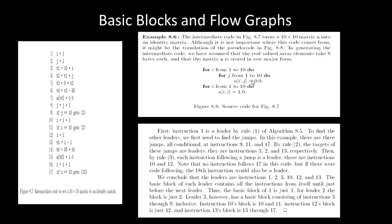Let's look at an example. We have an intermediate code for a 10 by 10 matrix. This is our program for the creation of that 10 by 10 matrix with 17 instructions. Now we have to create basic blocks. The first instruction becomes the leader. To find other leaders we need to find the jumps. In our code, the conditional jumps are at instructions 9, 11, and 17.